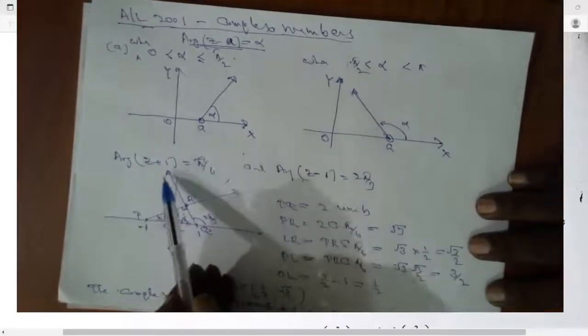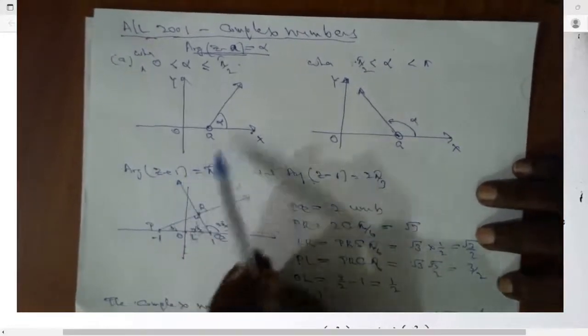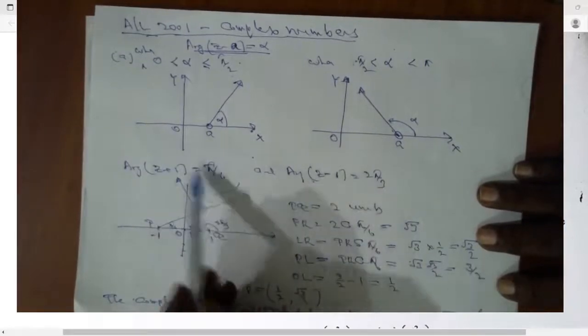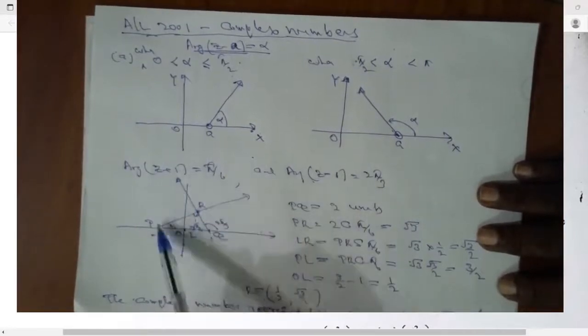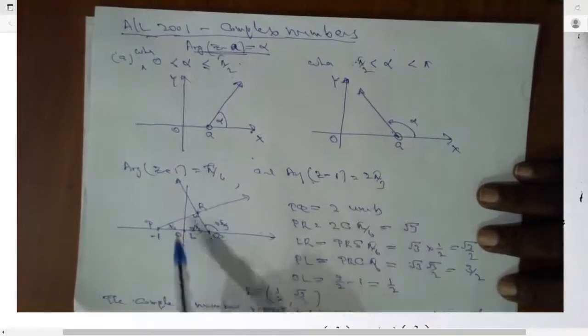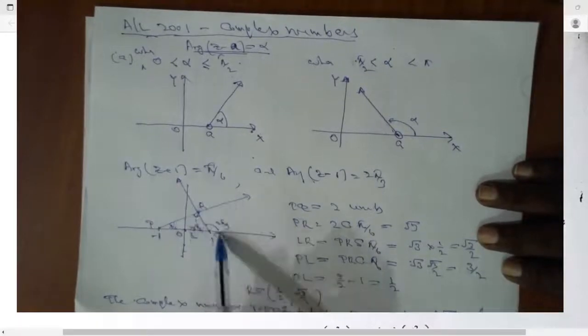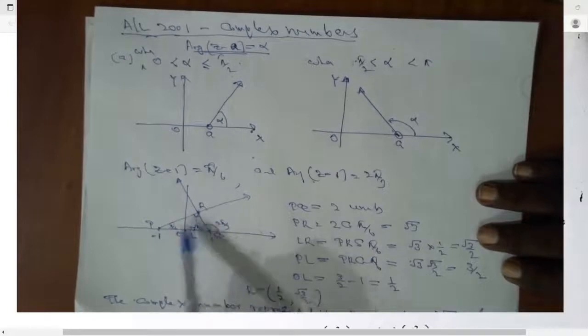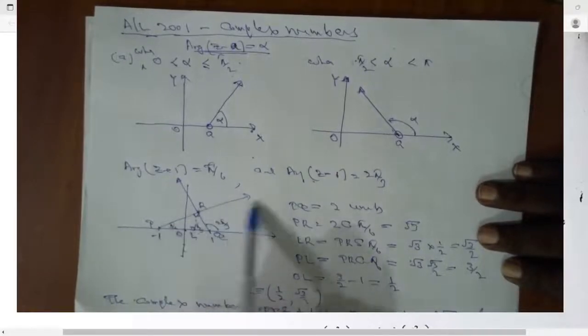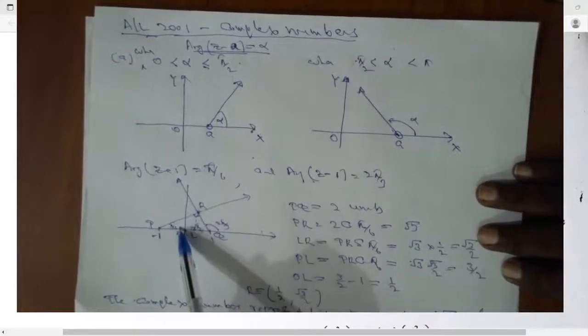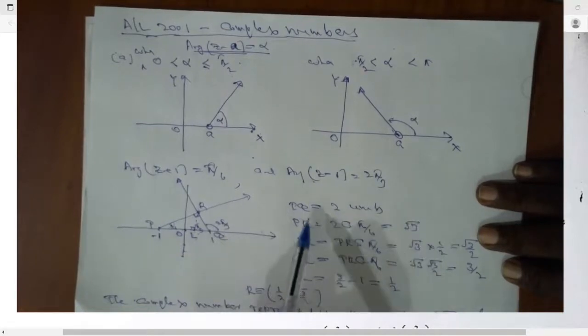Now if you come to the next part, you are given two lines like this. Very easily you can draw in the same diagram. Two lines. But this triangle, if you construct this, if you plot the two lines, you have triangle PQR, then PR is perpendicular to QR. Because this is pi by 6, this is pi by 3. When this is 2 pi by 3, this is pi by 3.